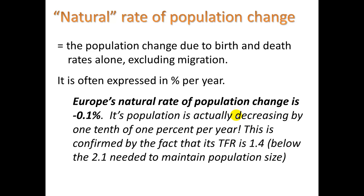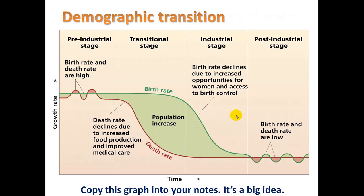You may see this in your age structure diagrams in the lab. This model is referred to a lot in population studies: the demographic transition. You should copy this into your notes — it's a big idea and we'll be discussing it more tomorrow. It can also help explain different shaped age structure diagrams. There are four stages: the pre-industrial stage, transitional stage, industrial stage, and post-industrial stage.